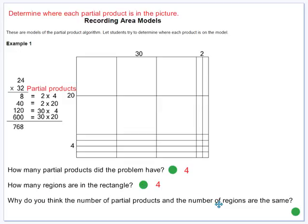Why do you think the number of partial products and the number of regions are the same? There are 4 products and 4 regions. So the 4 products use the same numbers as the dimensions of the regions.